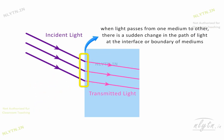When a ray of light passes from one medium to the other, there is a sudden change in its path at the interface or boundary of the two mediums. This is called refraction of light.